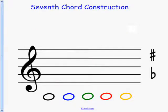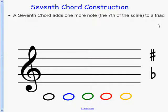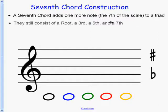We're going to talk about seventh chords. Seventh chords actually add one more note, which is the seventh of the scale, to the triad. They still consist of a root, a third, and a fifth, but now they have a seventh.